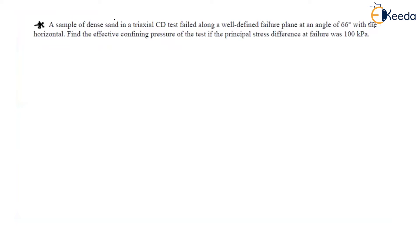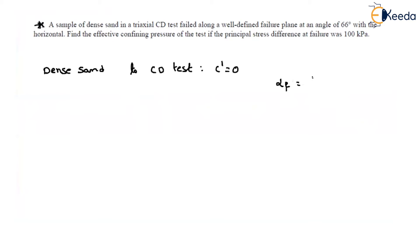Next question: A sample of dense sand in a triaxial CD test. For dense sand in a consolidated drained test, effective cohesion c' = 0. The sample failed along a well-defined failure plane at an angle of 66 degrees with respect to the horizontal. That means αf = 66°. Since αf = 45 + φ'/2, we get: 45 + φ'/2 = 66°, so φ'/2 = 21°, and therefore φ' = 42 degrees.